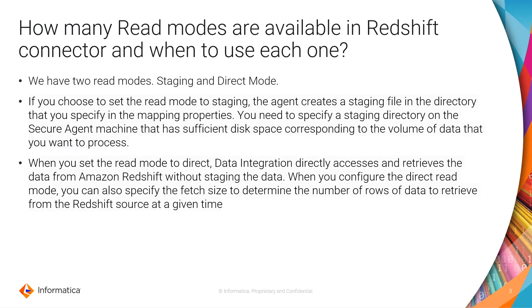The Staging mode — if you want to read data in no specific order, then Staging mode is your best option. Also, if you want to get the best performance when reading data, Staging is also your best option. What happens here is the connector is going to read information from Redshift into S3 and then from S3 into some staging files in your server. You need to specify the name of a bucket and the folder where you can save those staging files.